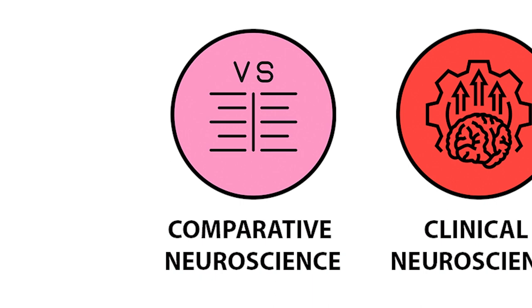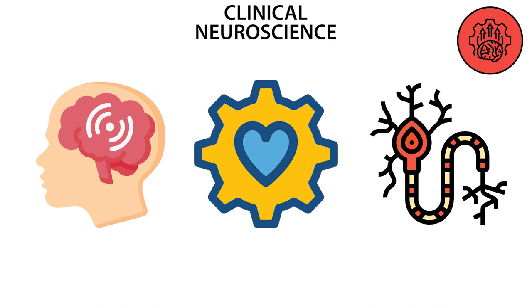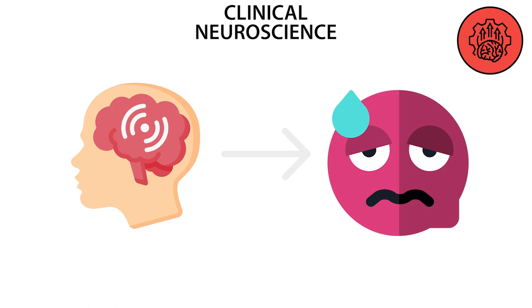Clinical neuroscience is a branch of neuroscience that focuses on the scientific study of fundamental mechanisms that underlie diseases and disorders of the brain and central nervous system. It seeks to develop new ways of conceptualizing and diagnosing such disorders and ultimately of developing novel treatments. The object of study of clinical neuroscience is the brain of a sick person.